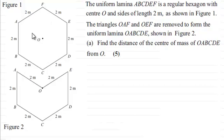And triangles OAF and OEF are removed from this uniform lamina and we get this shape here. And what we've got to do is find the distance of the center of mass from O. And this is worth 5 marks.